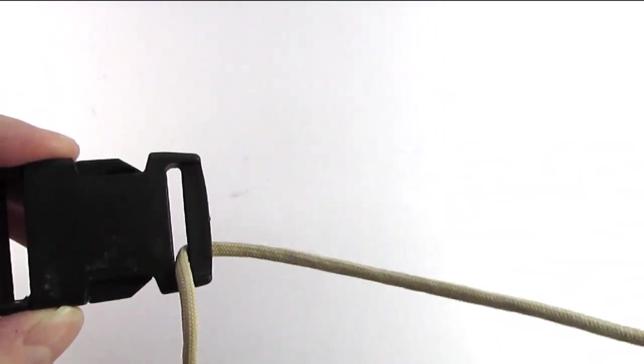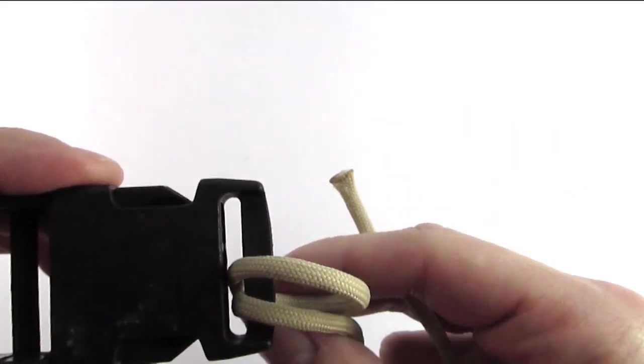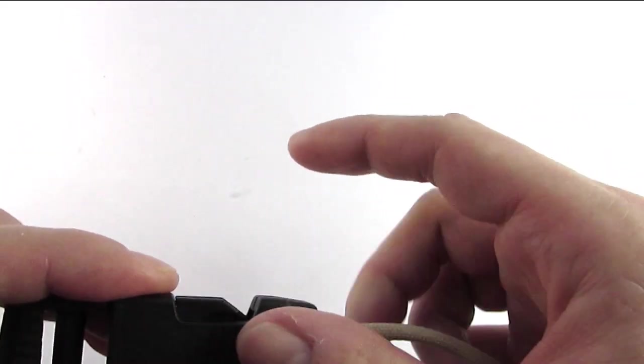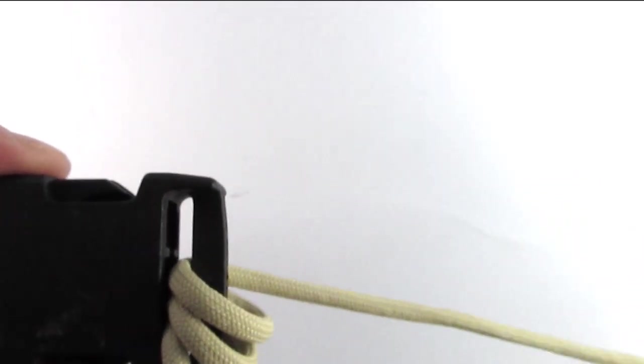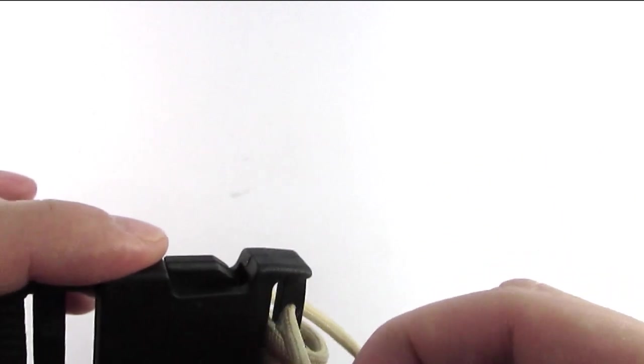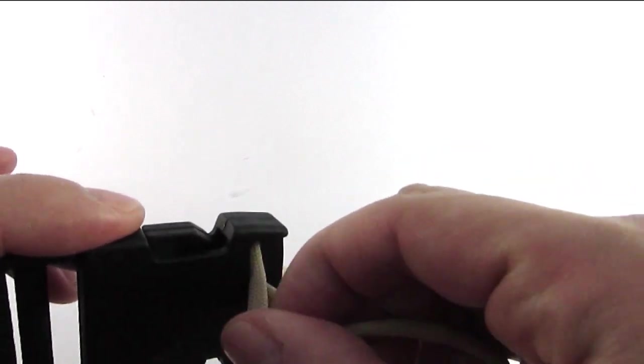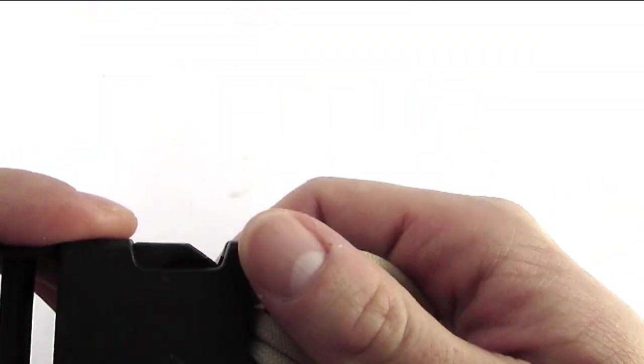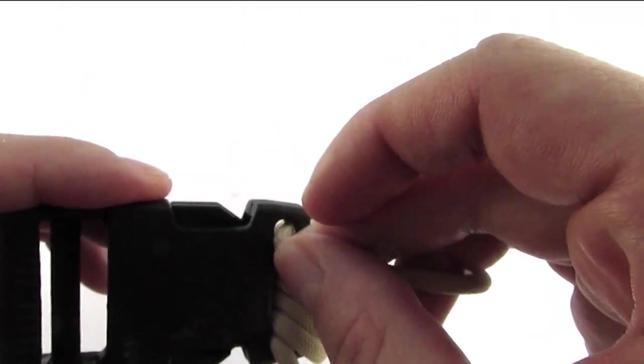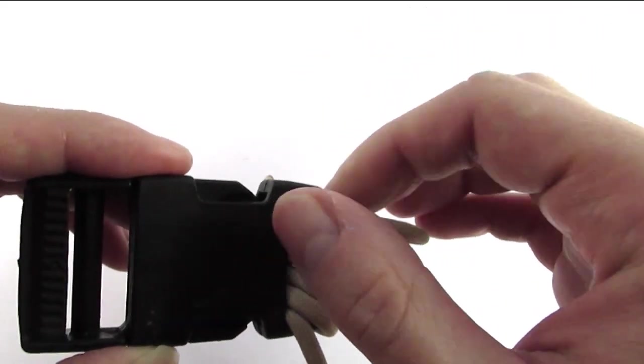What we're going to do is wrap it around a few times making loose loops. You don't need to tighten them yet. I'm going to make five loops here. If you have a wider buckle you can use more, or if you have a smaller one you can use less.